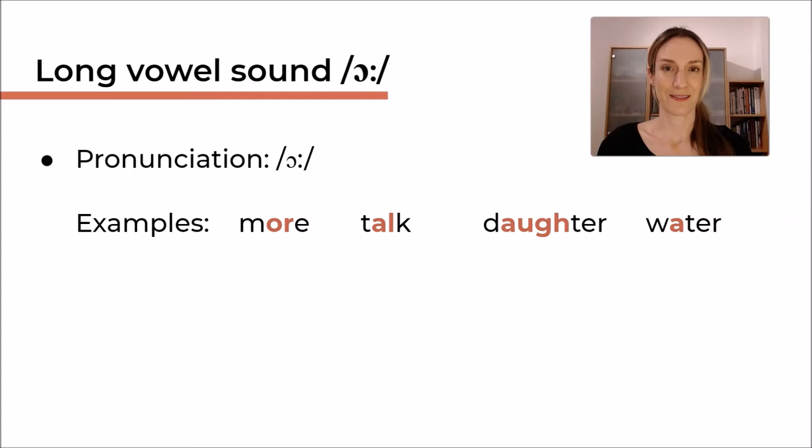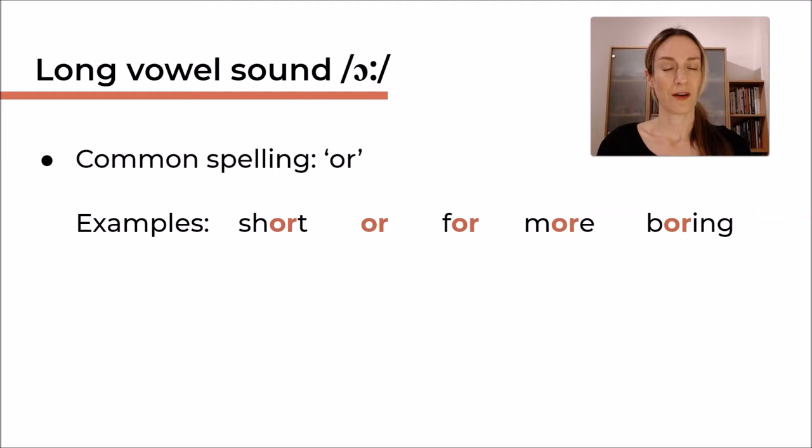Usually we have the spelling OR. This is a very common spelling pattern for the sound /ɔː/. For example, here are some words: short, or, for, more, boring. You might think, or, isn't that the spelling? Yes, but or as in and or that, it's also a word. So short, or, for, more, boring. You can actually hear it when we say them all in one go. It's the same sound in each of the words.